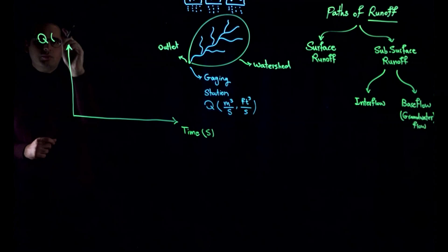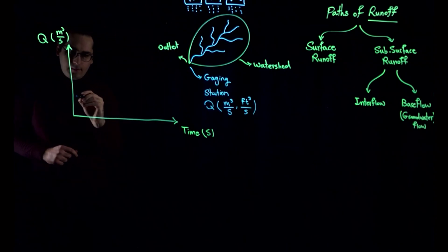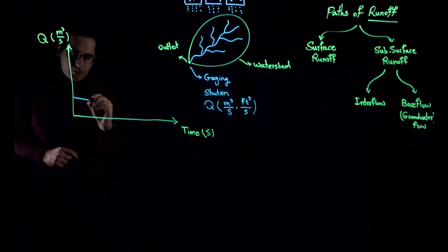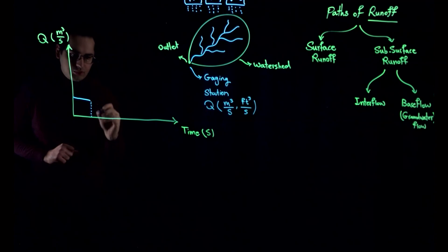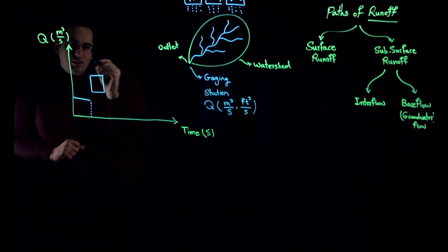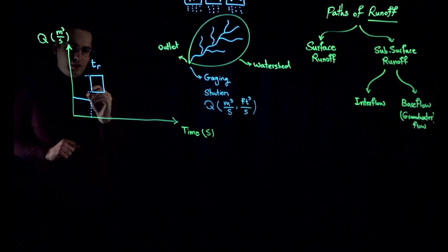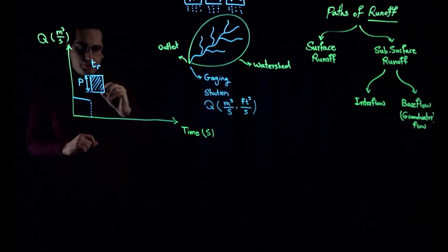Discharge is volume divided by time, so for example cubic meters per second. Before the rainfall, the flow was at some baseline level. As the rainfall starts, I will show the rainfall as a block. The duration of rainfall is T sub R, and the height of the rainfall block is P in depth. This represents the rainfall over your watershed.